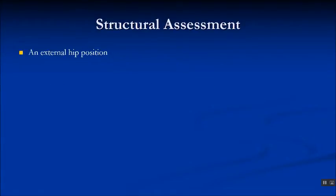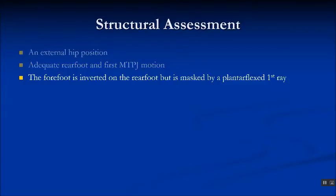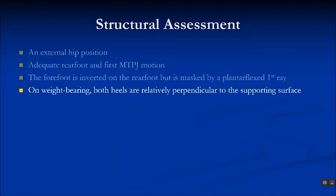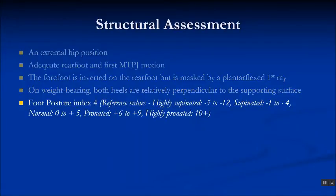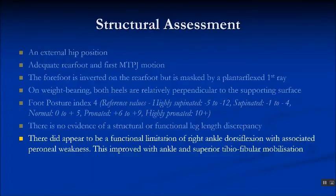Returning to this case, she had an external hip position and our evaluation with PDAR tends to show that patients with an external hip position load the lateral border of the foot until they start to get heel lift and the influence of the hip is lost. There was adequate rear foot and first MTPJ motion with no restrictions. The forefoot was mildly inverted on the rear foot and symmetrical, and in weight bearing both heels were relatively perpendicular to the supporting surface. She had a foot posture index of 4, within the normal published range, and there was no evidence of a structural or functional leg length discrepancy, but she did have a functional limitation of ankle dorsiflexion with associated peroneal muscle weakness.